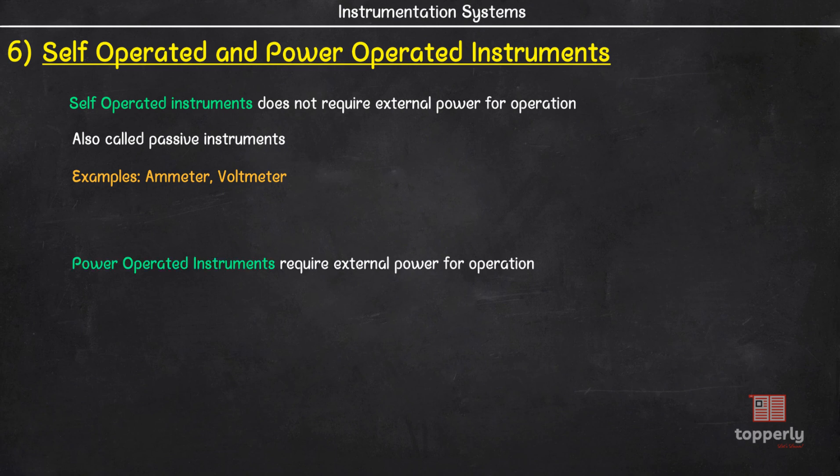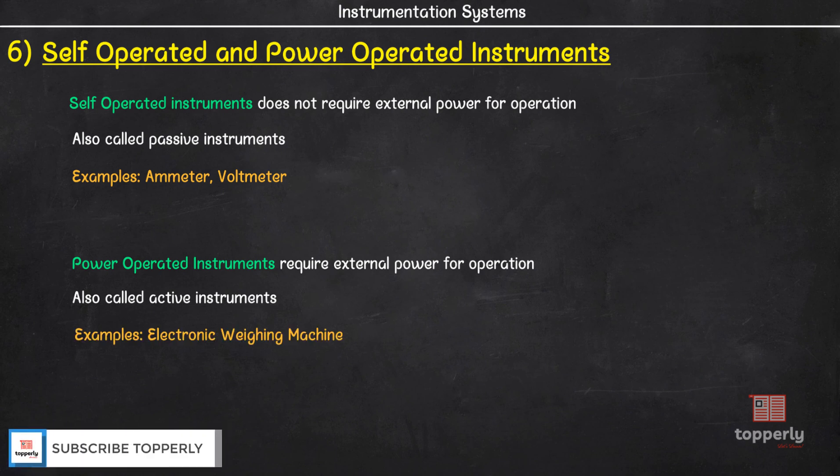Power-operated instruments are those in which external power supply is required for operation. They are also called active instruments. For example, in the case of an electronic weighing machine, we need to plug it into a 240V supply to operate it. So here we are taking power from the supply and therefore is a power-operated instrument. Also, please note that active instruments need not be always electrical. It can also be hydraulic or pneumatic.